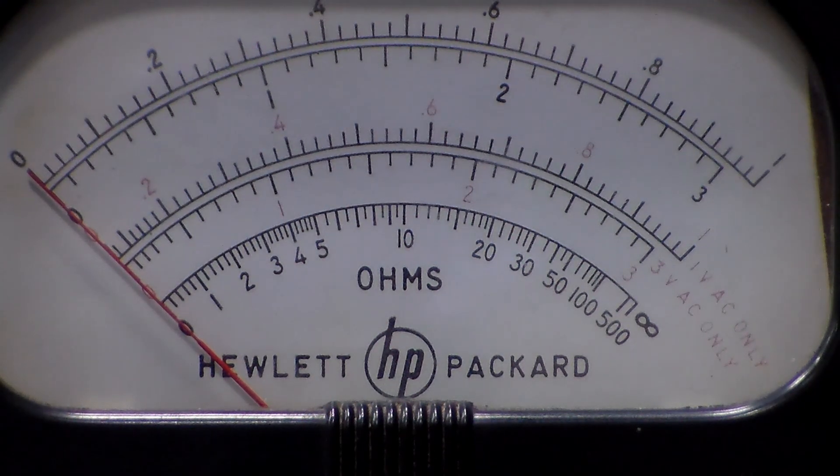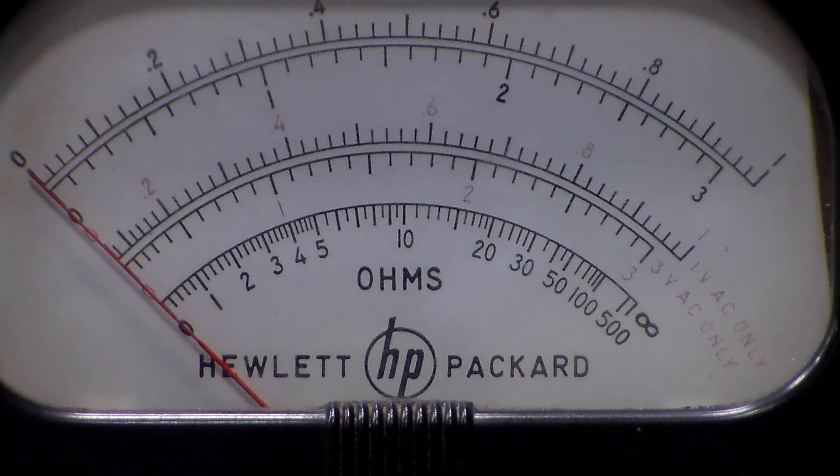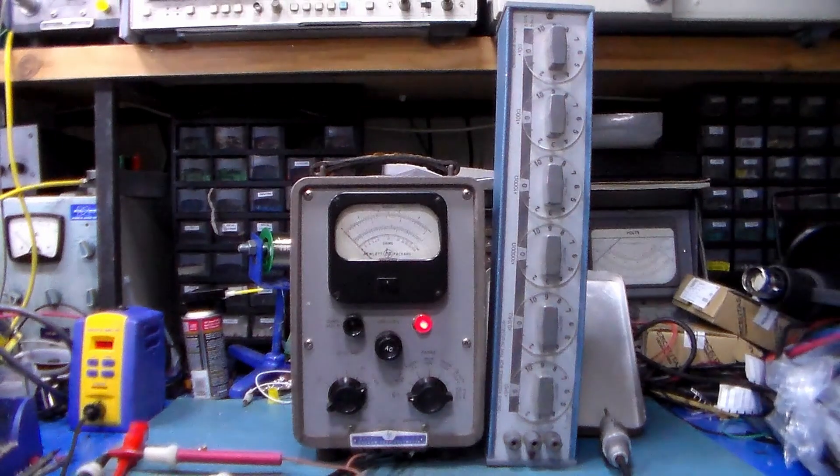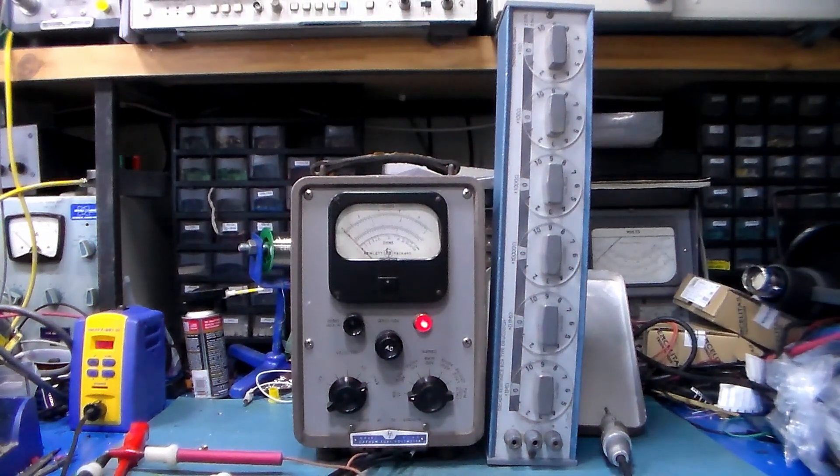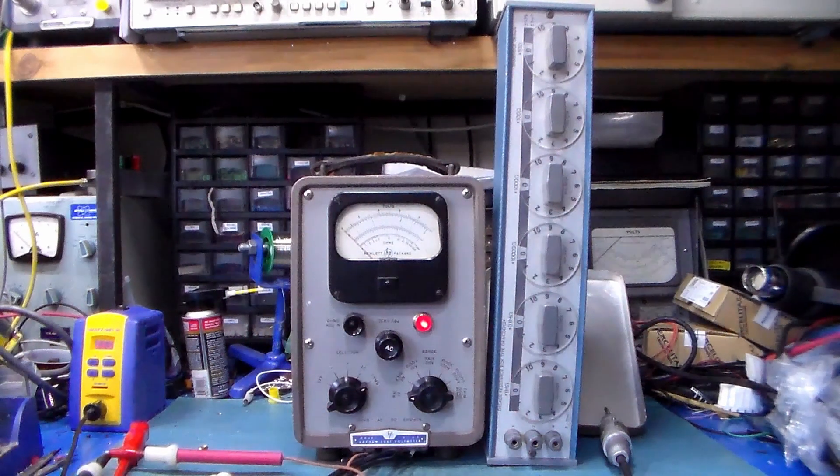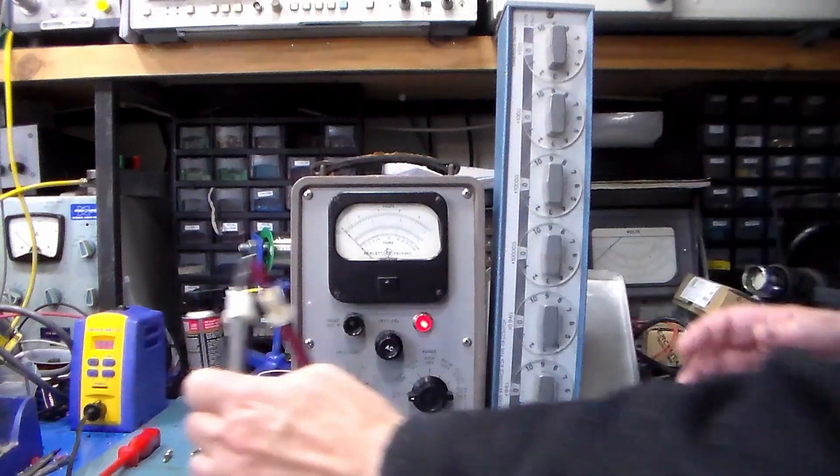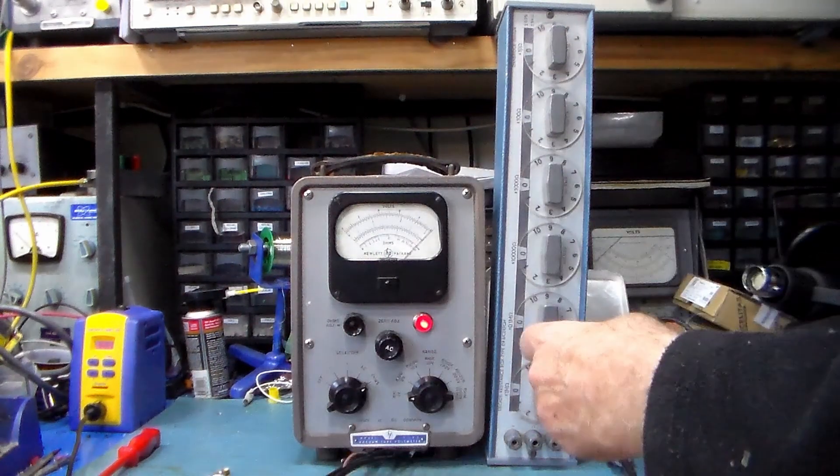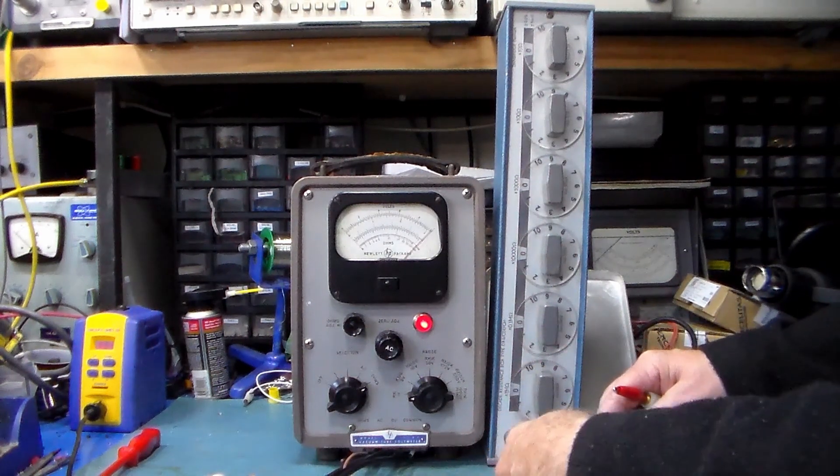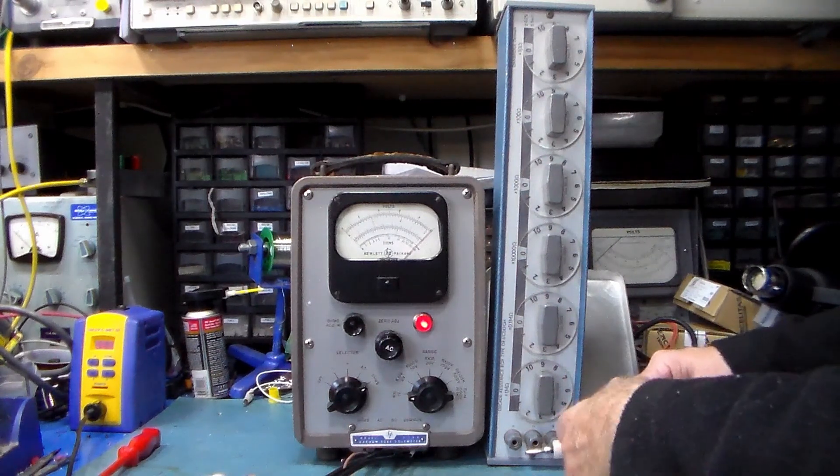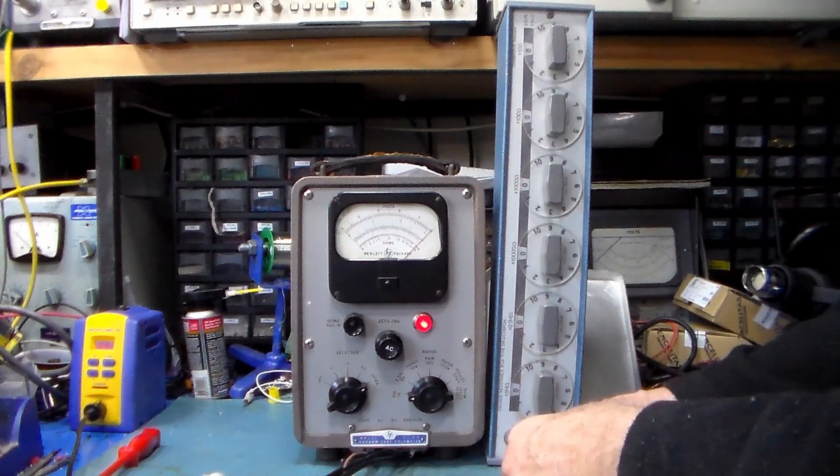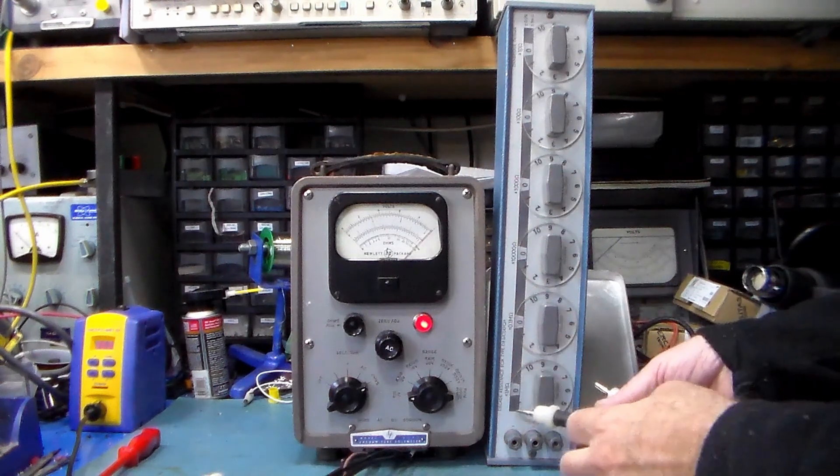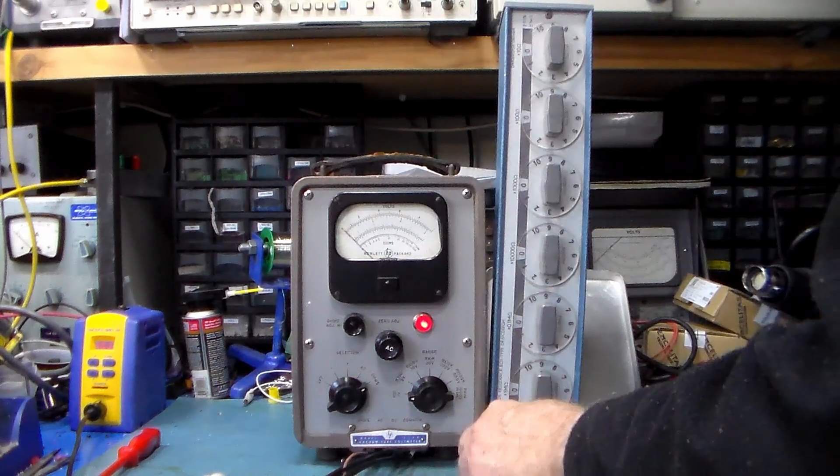So now we should be pretty well ready to do some checks. We'll just zoom out again and now we'll hook up the decade box. We'll just take these probes off and place on these banana connections, then we can just plug that straight into the decade box. We'll plug that one in and that one in.